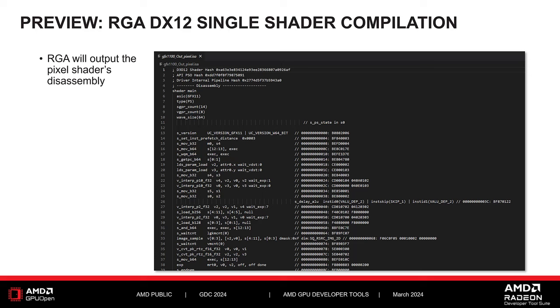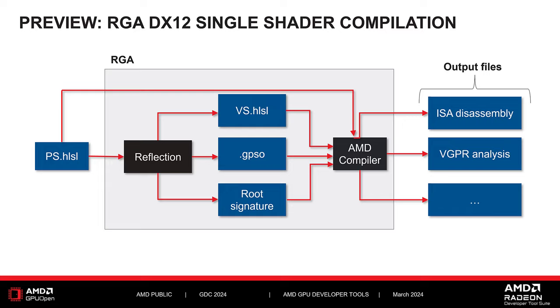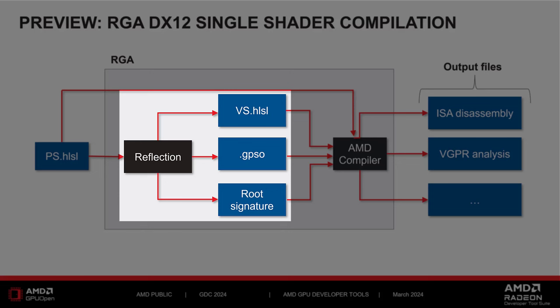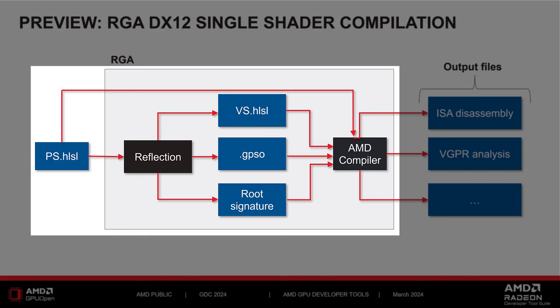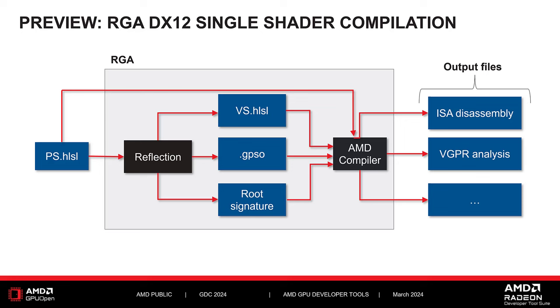To summarize the compilation workflow: starting with the pixel shader HLSL file, RGA uses reflection to generate the vertex shader, the graphics pipeline state in a GPSO file, and the root signature. The AMD shader compiler is then invoked with the provided pixel shader and the auto-generated files, producing the expected output. This feature will make RGA's DX12 mode easier to use than ever before. Please stay tuned to GPUOpen.com for more information when it becomes available.